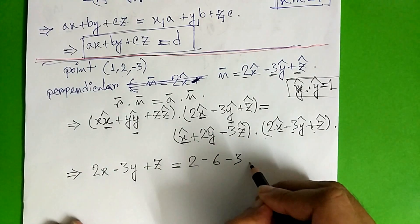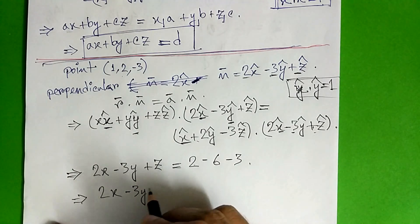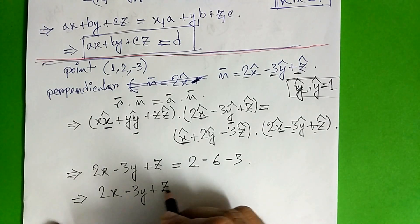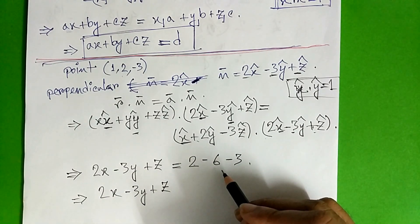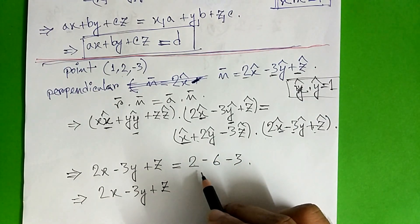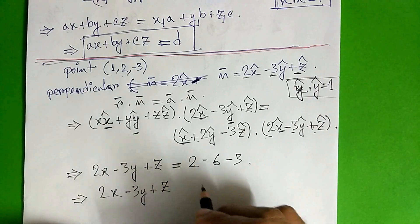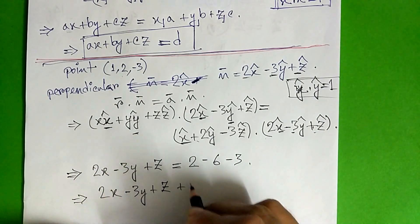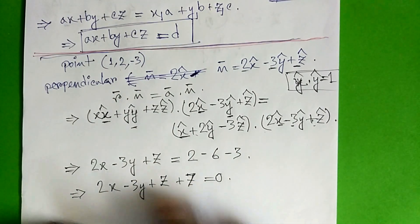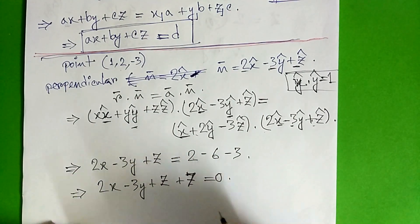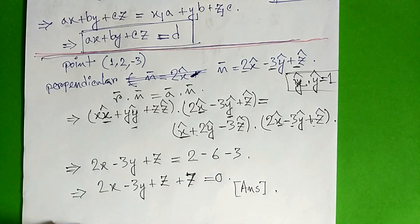So 2x minus 3y plus z. The next step is 2 minus 6 minus 3, which is 9 minus 9 plus 2, giving us minus 7. So z equals minus 7, meaning 2x minus 3y plus z plus 7 equals 0. That is our final equation.